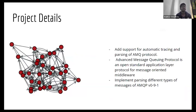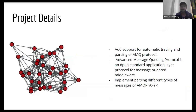AMQP stands for Advanced Message Queuing Protocol. It's an open standard application layer protocol for message-oriented middlewares. It's very similar to MQTT if you've heard of that. What I had to do was implement parsing of different types of messages of AMQP version 0.9.1. There are different versions of AMQP available, but I had to work on this one.